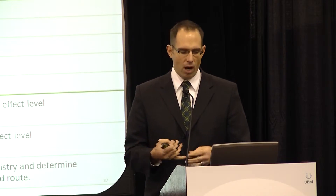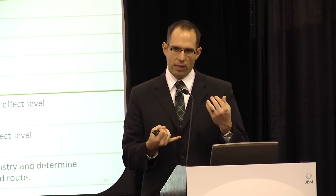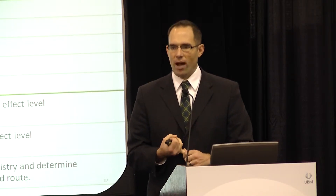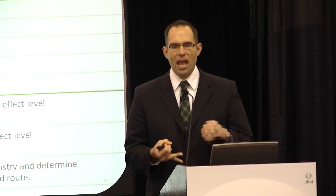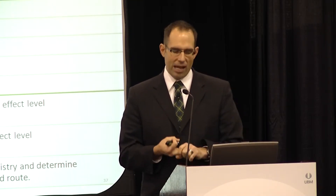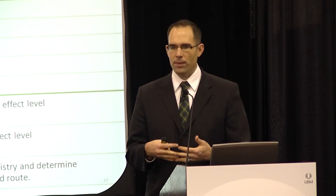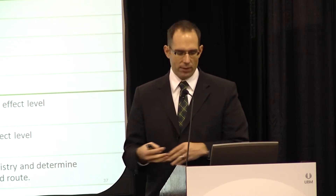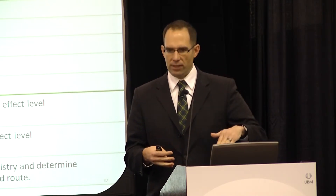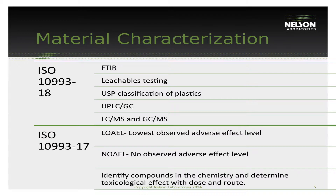Some of the more common chemistry techniques are GCMS, which looks for volatile and semi-volatile compounds, HPLC, and FTIR. These techniques help us identify and quantify what's in that solution. ISO 10993-17 then takes that data and uses it for toxicological output — to identify these compounds and what concern they present to the patient from a toxicological endpoint.